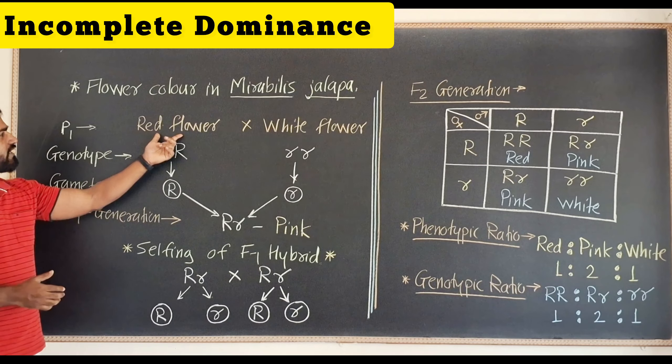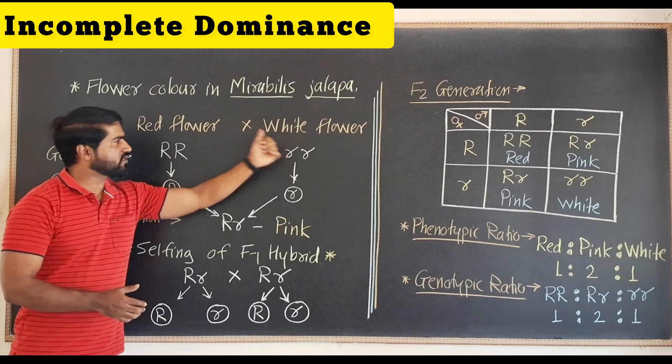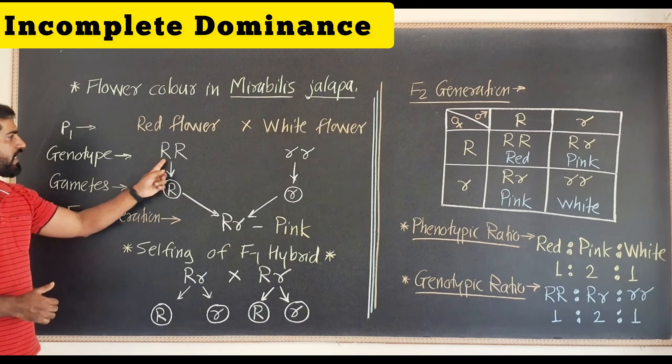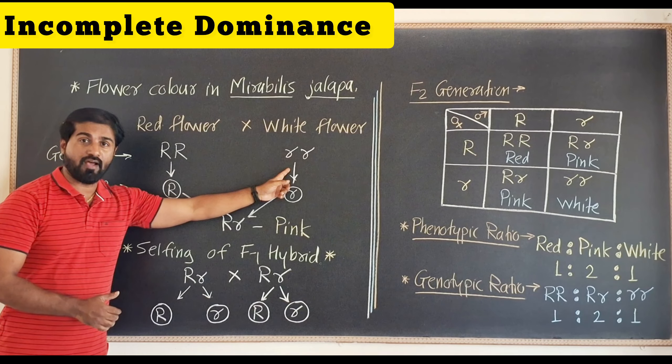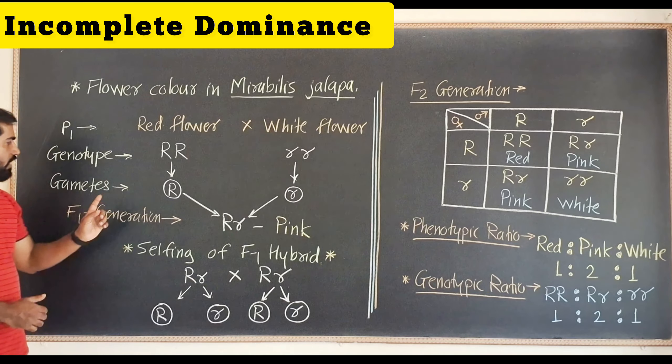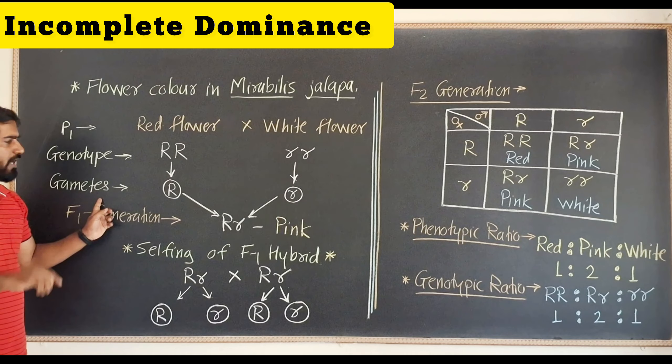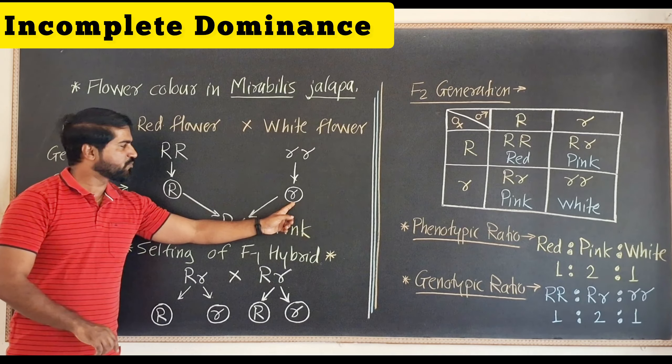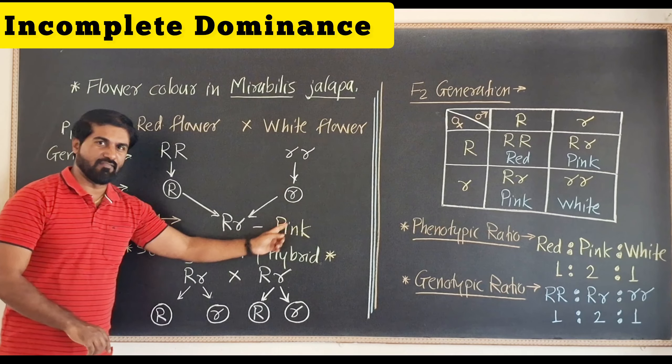So parental generation or P1 is red flower. We are going to cross this with white flower. The genotype will be capital R capital R and small r small r. Therefore it will produce only one type of gamete - capital R for red flowers and small r for white flowers.